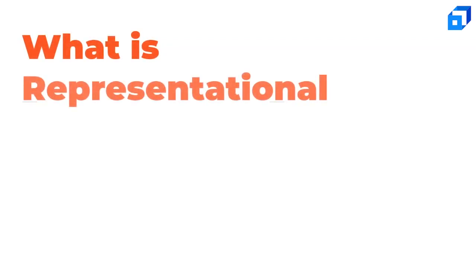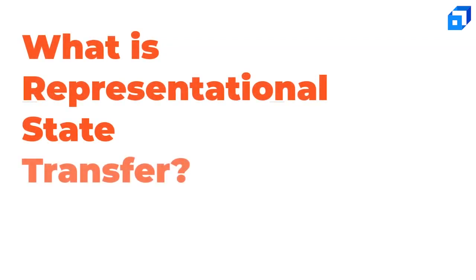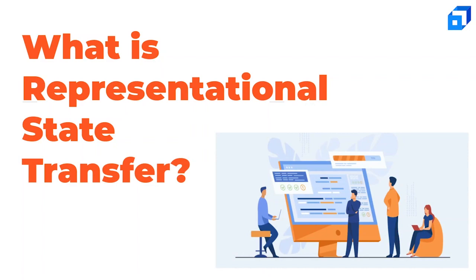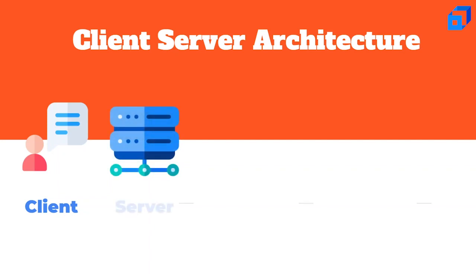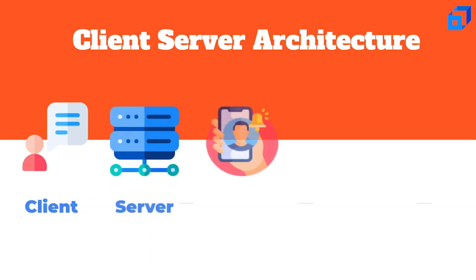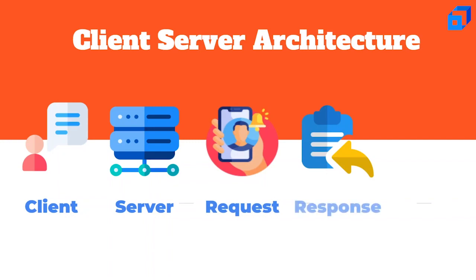Now that we know how unique REST API is, we still know nothing about how it works or what exactly it is. The big question is: what exactly is Representational State Transfer, that is, REST? To comprehend this, we first need to understand client-server architecture. A basic client-server architecture involves a client, server, request, response, and resource.